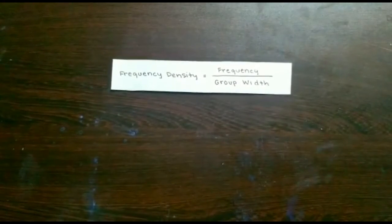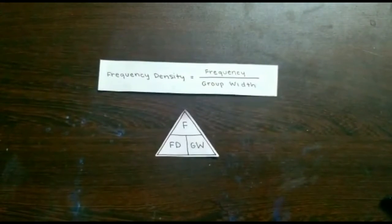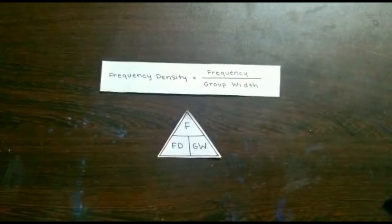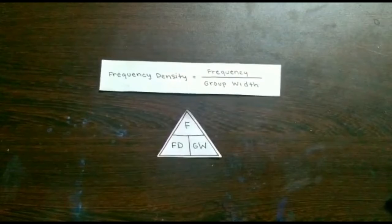Instead of plotting frequency on the y-axis of a histogram, we plot frequency density. Frequency density is essentially the ratio of the frequency of a class to its width. To calculate this, you divide the frequency of the group by its width.